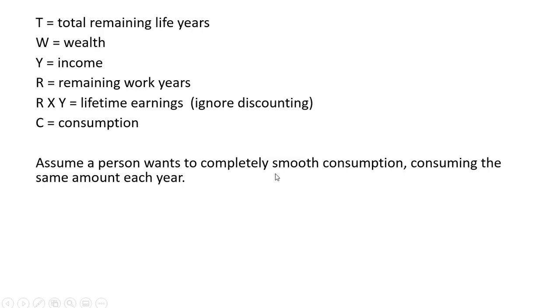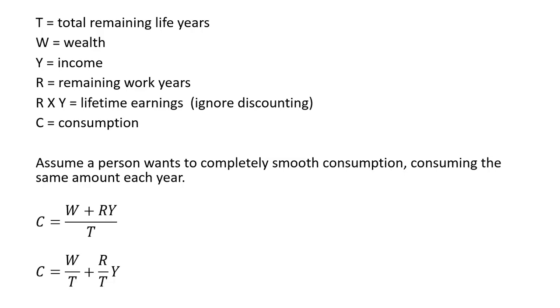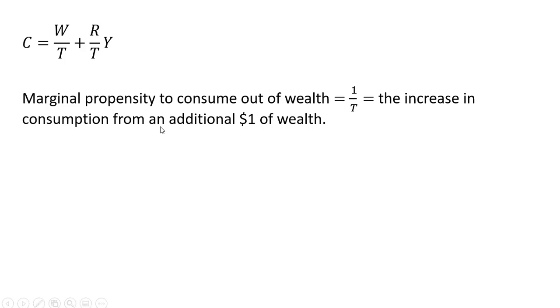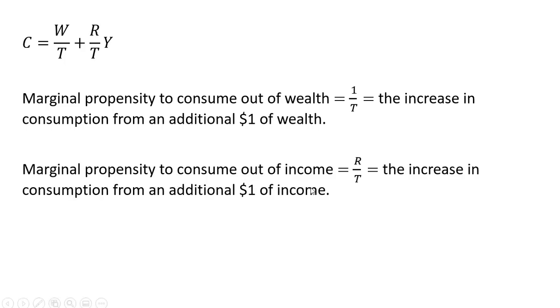We're going to assume a person wants a completely smooth consumption, consuming the same amount each year. In this case, the consumption function will take on this form, which can be rewritten as follows. R times Y is lifetime earnings, where we're ignoring discounting and assuming the interest rate is zero. The marginal propensity to consume out of wealth is 1 divided by T — the increase in consumption from an additional dollar of wealth. The marginal propensity to consume out of income is R divided by T — the increase in consumption from an additional dollar of income.